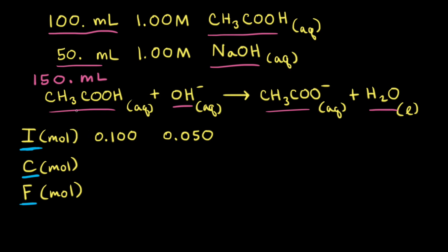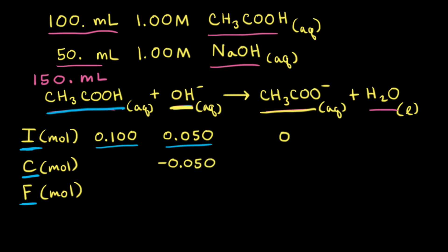We've already calculated the initial number of moles of acetic acid is 0.100, and the initial number of moles of hydroxide anions is 0.050. If we assume the reaction hasn't happened yet, the initial moles of the acetate anion would be zero. For this reaction, the hydroxide anion is the limiting reactant, so we're going to use it all up. We write minus 0.050 under hydroxide in our ICF table.